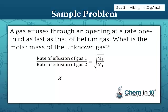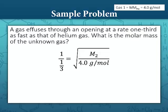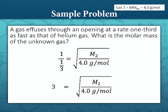That equals the square root of the molar mass of our unknown divided by the molar mass of helium, which is 4.0 grams per mole. Notice how the X's cancel out. So now we have one divided by one-third equal to the square root of the molar mass of the second gas divided by the molar mass of helium. One divided by one-third is the same thing as three, so three equals the square root of the molar mass of our unknown gas divided by the molar mass of helium.